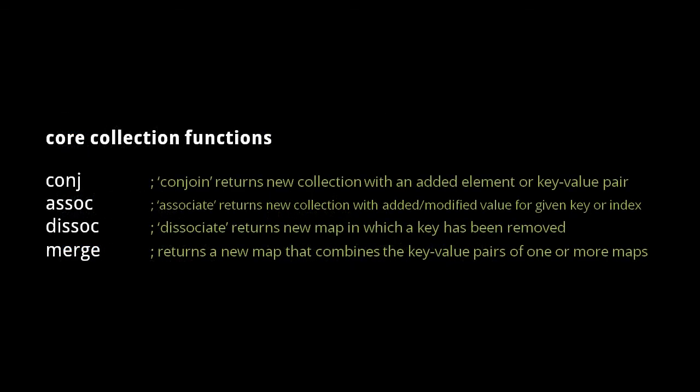Here are four more functions. The conj function, short for conjoin, returns a new collection with an added element or key-value pair. The assoc function, short for associate, returns a new collection with an added or modified value for a particular key or index. The dissoc function, short for dissociate, returns a new map in which a particular key has been removed. And the merge function returns a new map that combines the key-value pairs of one or more maps.